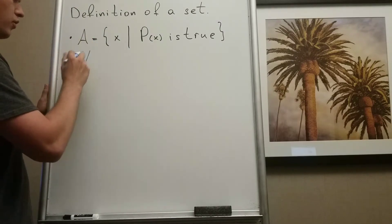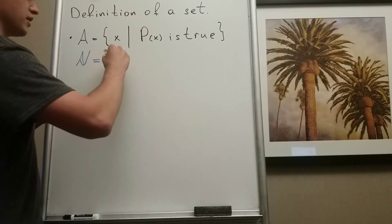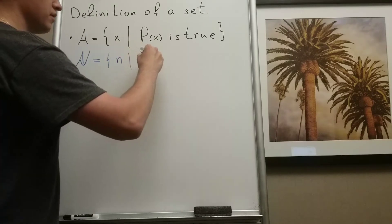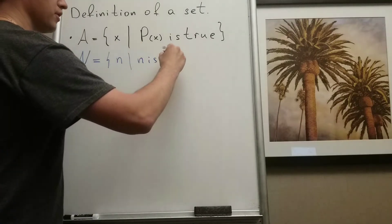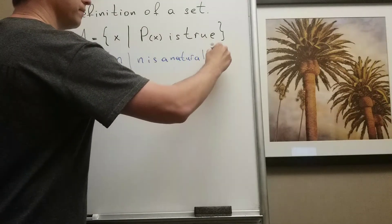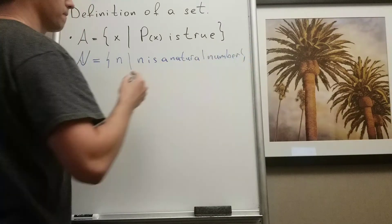So we're going to write natural numbers in that case, that there is such number N such that N is a natural number.